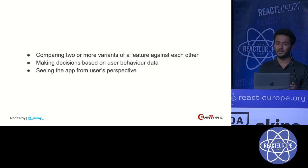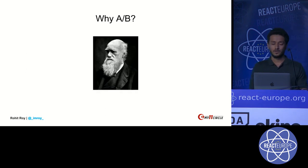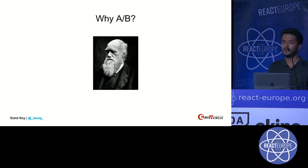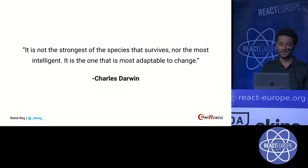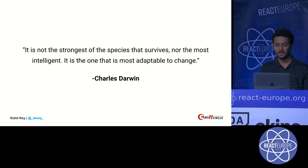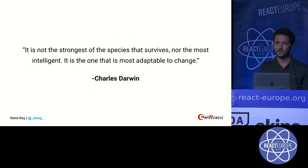AB testing helps us make decisions based on user behavior data and gives us insight into how the user feels about a product. Why should we do AB testing? Because of Charles Darwin — he said it's not the strongest or most intelligent species that survive, it's the species that adapts best. That same holds true for our applications and products. It's not the best code you write that will survive most; it's the code that can adapt to the changing needs of users.